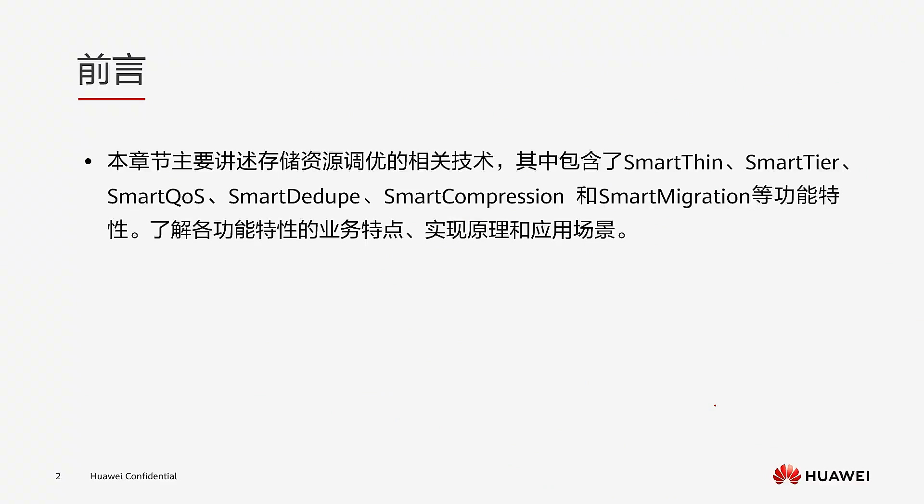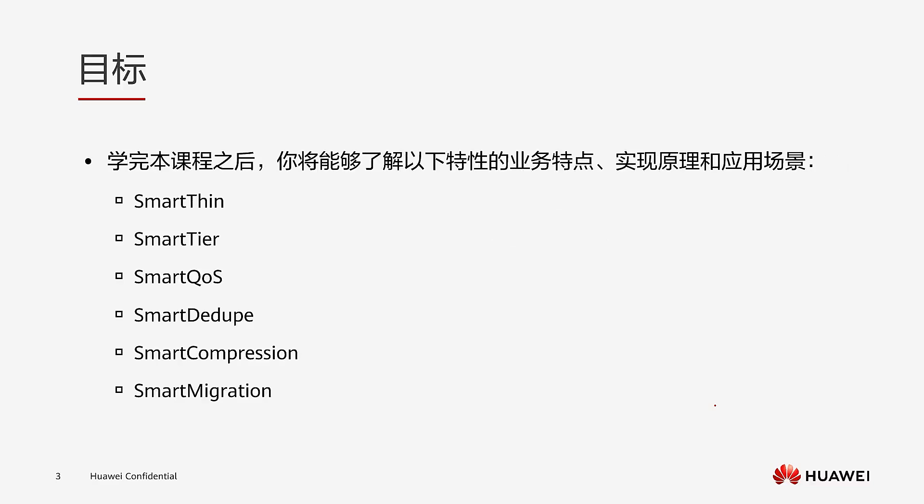This chapter mainly discusses the related technologies of storage resource tuning. This includes features such as Smart Thin, Smart Tier, Smart QoS, Smart Dedupe, Smart Compression, and Smart Migration. Through learning, we will understand the business characteristics of various functions, their implementation principles, and application scenarios.